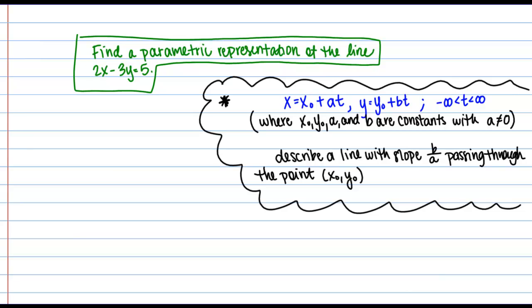In this video, we're going to work through an example involving parametric equations of lines. We're going to find a parametric representation of the line 2x minus 3y equals 5. Actually, we're going to find three or four different parametric representations of this line to emphasize the fact that these parametric representations are not unique.